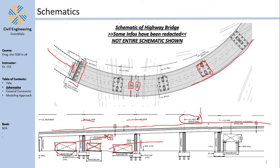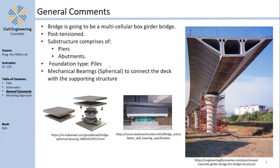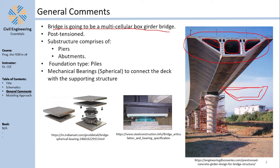The first key thing to mention is that our bridge is going to be a multi-cellular box girder bridge. It is called multi-cellular because the box girder is made of various cells connected together. There are also box girders with only a single cell, but ours is multi-cellular. The box girder is post-tensioned, and our substructure comprises piers and abutments — the retaining walls at the start and end of the bridge.